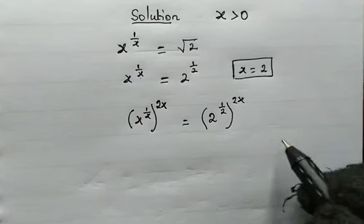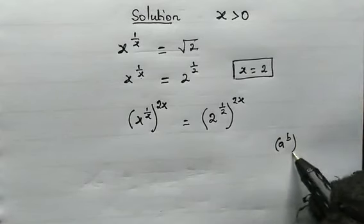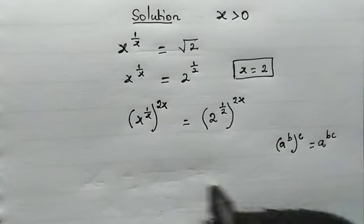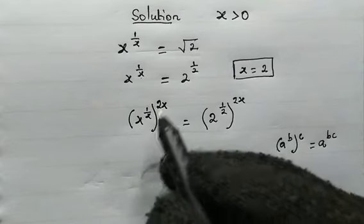Now, from here, with this property, a to the power of b to the power of c, this is equal to a to the power of b times c. Now, from here, 1 over x times 2x.